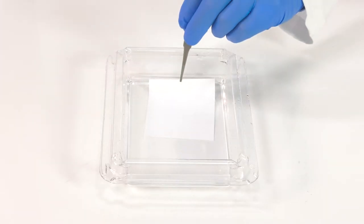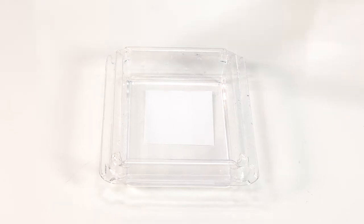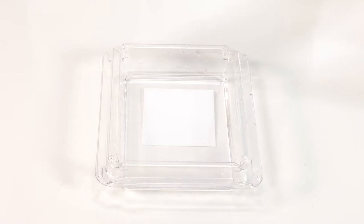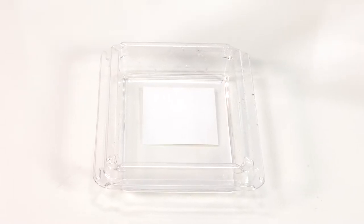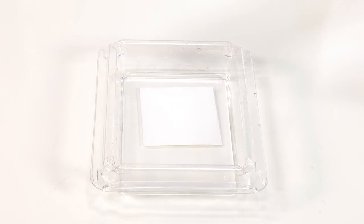Next, wet the membrane in TBST if using nitrocellulose or methanol if using PVDF by slowly sliding it in at a 45 degree angle. Allow it to soak for 15 to 20 minutes. Abrupt wetting can lead to entrapment of air bubbles in the matrix affecting transfer quality.